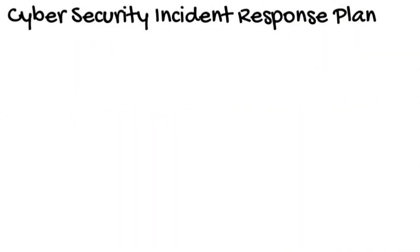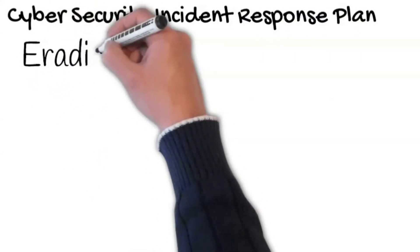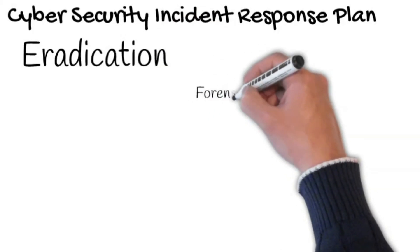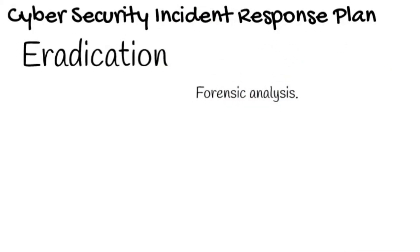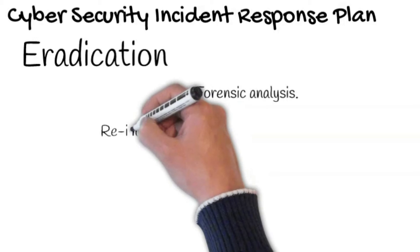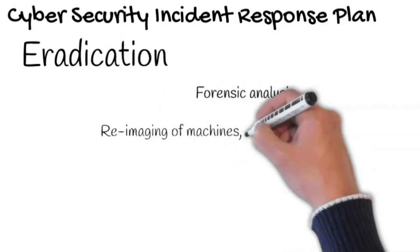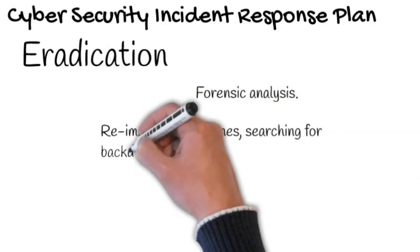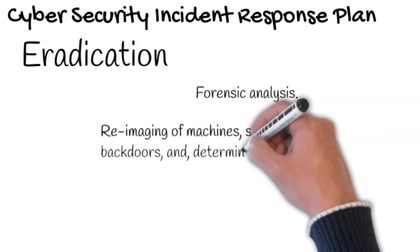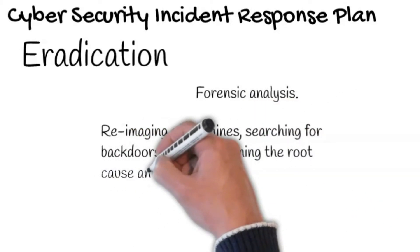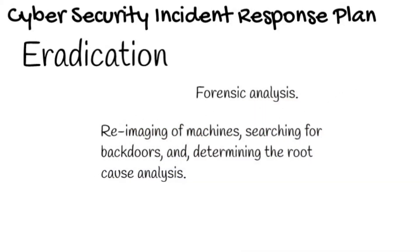Stage 4: Eradication is one of the most complex stages in the incident process, as it involves forensic analysis in order to determine the extent of presence of the threat actor. Security staff need to make sure that what they do in the eradication stage eliminates all presence and access of the threat actor to the system. This includes re-imaging of machines, searching for backdoors, and most importantly, determining the root cause analysis of the incident. Depending on the root cause, the eradication stage can be simplified by knowing the vector of attack that took place.